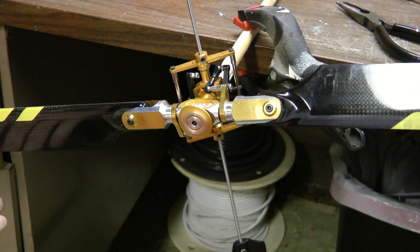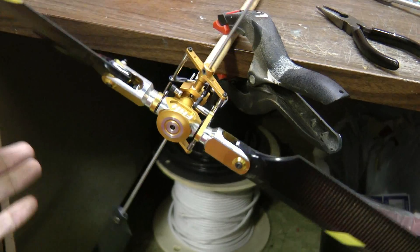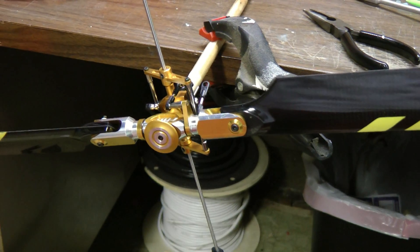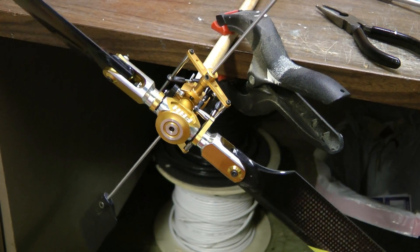I prefer this method over a blade balancer because this is what the rotor head is spinning on. So if there's any other imbalances in the metal, you're going to see it here. So you're going to get a more accurate balance.